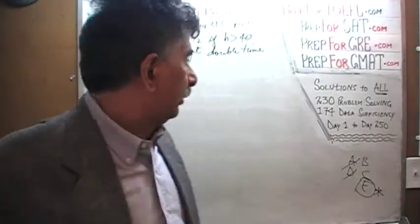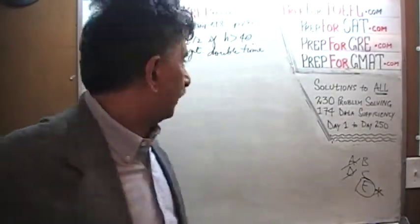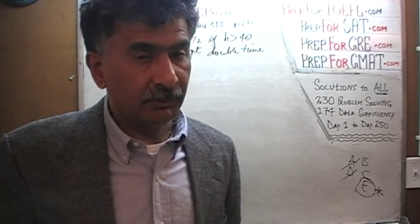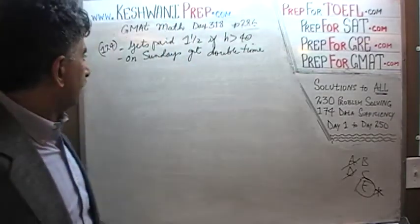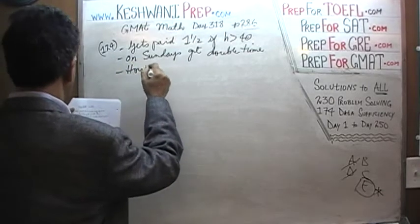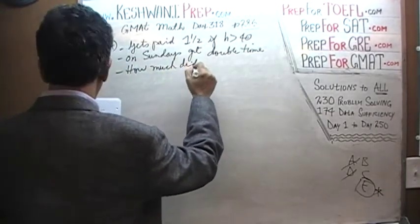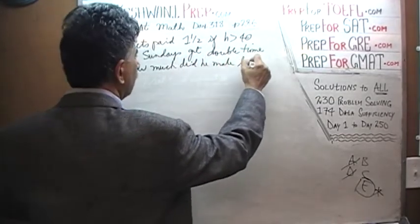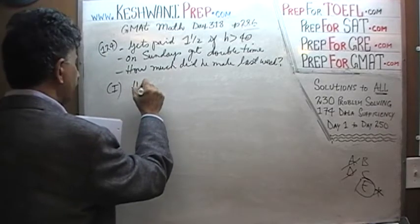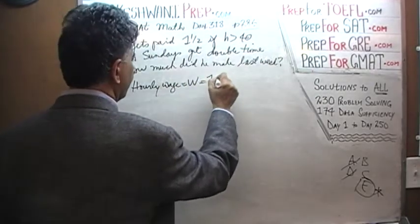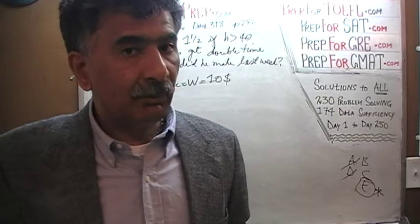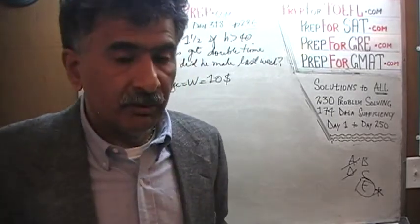On Sundays he gets paid double time, which is fairly standard. The instructor mentions working in a nursing home as a janitor about thirty years ago where holidays like the Fourth of July and Christmas paid three times the regular salary. The question is: how much did he make last week?